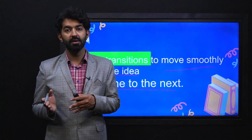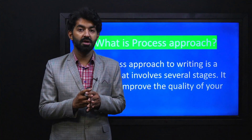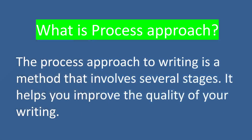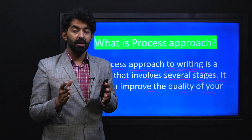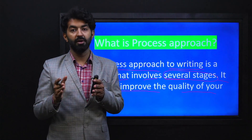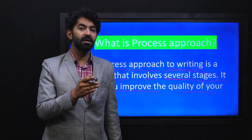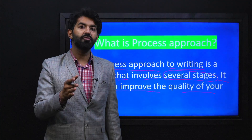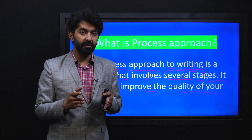Now let's talk about the process approach to writing, mentioned in our student learning outcome. The process approach to writing is a method that involves several stages and helps you improve the quality of your writing. We follow three steps: pre-writing, drafting, and post-writing. In pre-writing you are brainstorming and collecting ideas; in drafting you are actually writing; and in post-writing you are finalizing, proofreading, and editing.